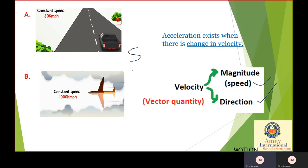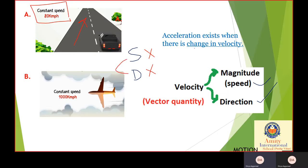Here I will use S for speed and D for direction to make it easier to understand. In the first case, the car is going straight — there is no change in direction. The speed is constant at 80 km per hour, so there is no change in speed either. Therefore, there is no change in velocity, and there is no acceleration.